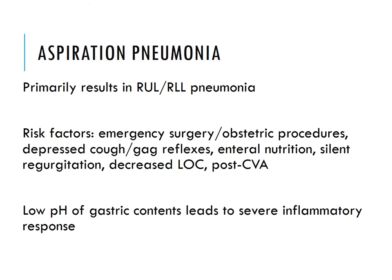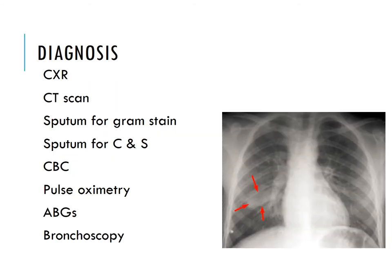Diagnostics include CBC, pulse oximetry, and ABGs. Bronchoscopy is reserved for patients with recurrent pneumonia or when antibiotic treatment isn't working — it's not a routine procedure since it's quite invasive.